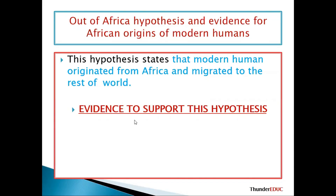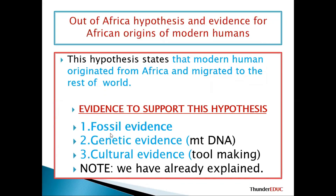Now let's look at the evidence to support this hypothesis. We have three types of evidence: number one, fossil evidence; number two, genetic evidence; and number three, cultural evidence.